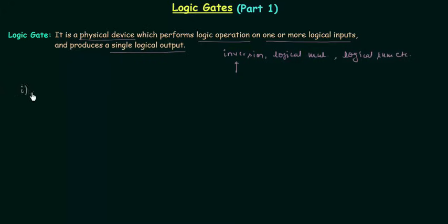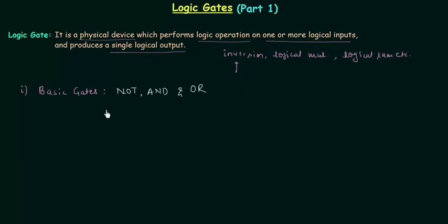Group number one is basic gates. In this group we have three gates: NOT gate, AND gate, and OR gate. We call NOT, AND, and OR basic gates because we can implement any logic by using them. By using these three gates only, we can implement any digital circuit. That's why we call them basic gates.